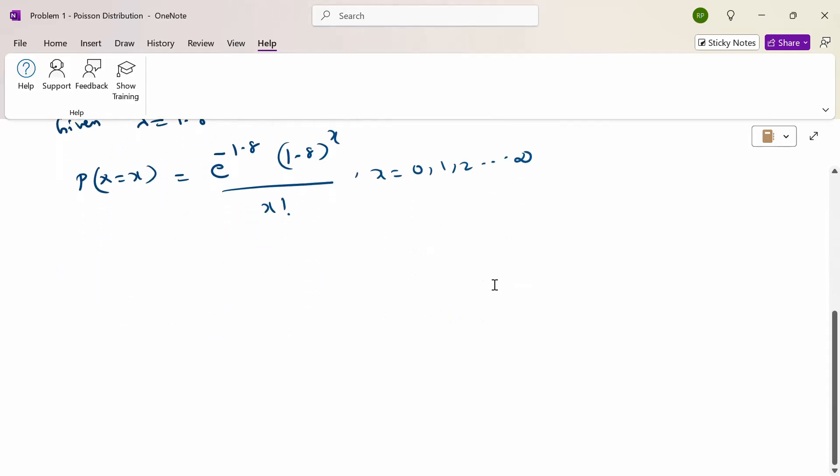Now, what is the first question? Before that, we need to define what is x. Because x is, I mentioned already, x is one-dimensional. In this one dimension, we need to fix what is x. X is nothing but number of breakdowns, number of breakdowns of the computer in a month. So this is the x value.